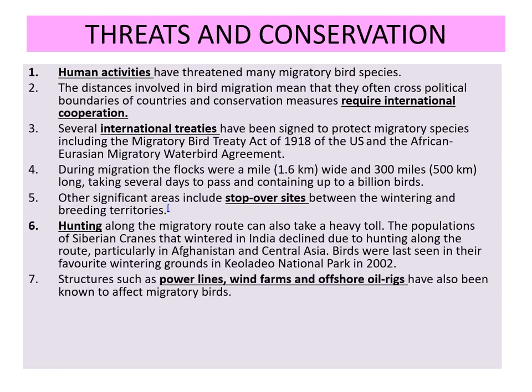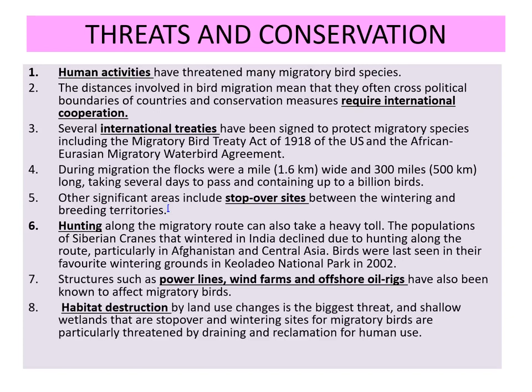Structures such as power lines, wind farms, and offshore oil rigs have also been known to affect migratory birds. Habitat destruction by land use changes is the biggest threat, and shallow wetlands that are stopover and wintering sites for migratory birds are particularly threatened by draining and reclamation for human use.